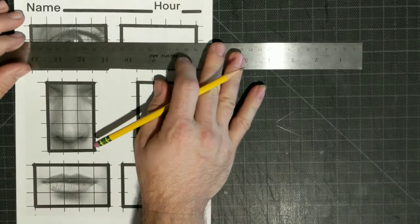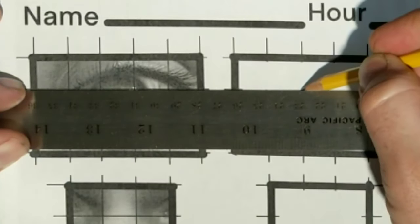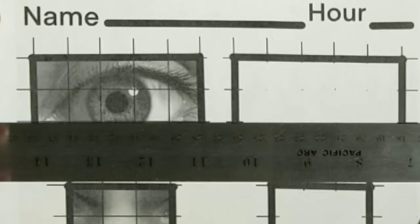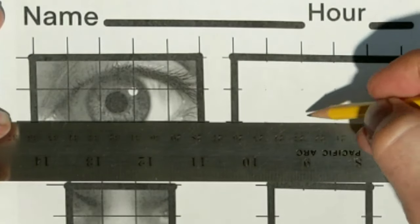I'm going to be making a copy of this eye and nose and mouth that are on the left side of the paper into the grids on the right side of the paper.